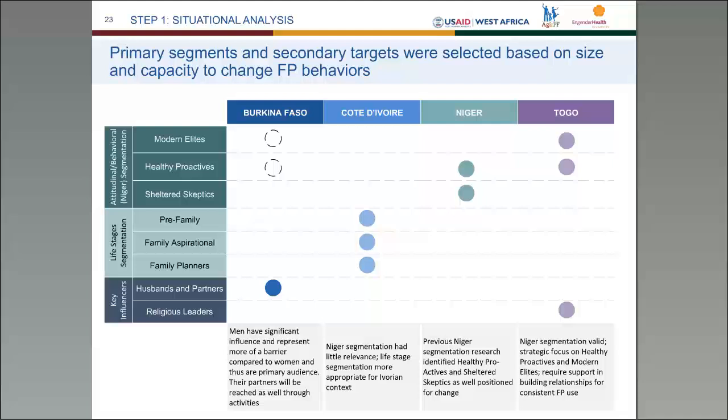In Togo, the priority segments were modern elites and healthy proactives, and we also found that in a context of various religious opinions, that group was important to consider in the campaign. In Niger, it was healthy proactives and sheltered skeptics — a group that tended to be a bit younger, had a lack of information and mistrust around family planning, really didn't have any good sources or confidence, and therefore were not using contraception. In Cote d'Ivoire, the segments that didn't exist in the other three countries were the pre-family segment — young women who felt they were too young to be married — the family aspirational — women on the point of becoming married who could find themselves in a vulnerable situation — and the family planners, in stable relationships thinking about spacing and potentially limiting. In Burkina Faso, the women were the most resilient to challenges around family planning, around access and side effects, going back and continuing to try methods until they found one that worked — so we chose husbands and partners as the primary audience.